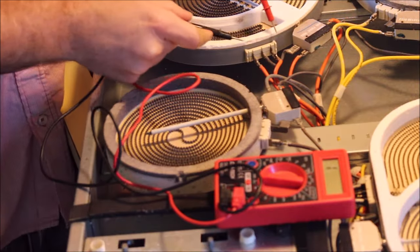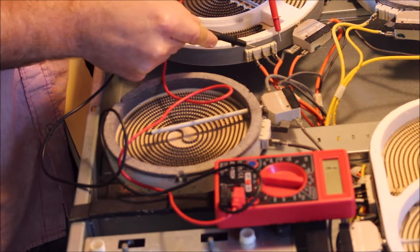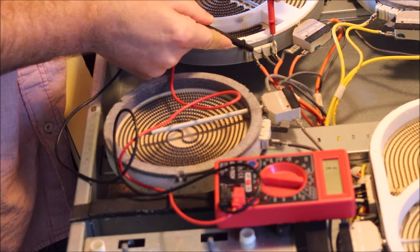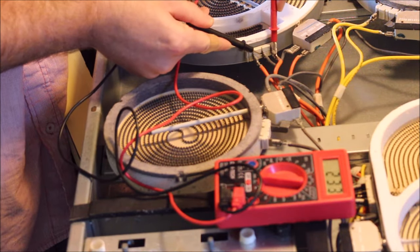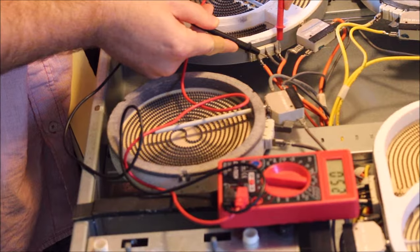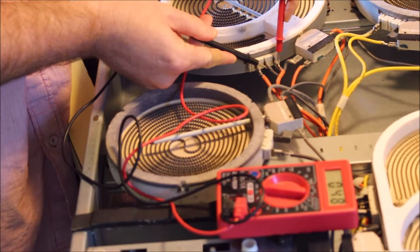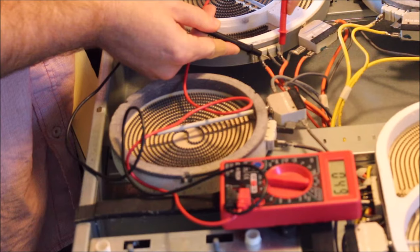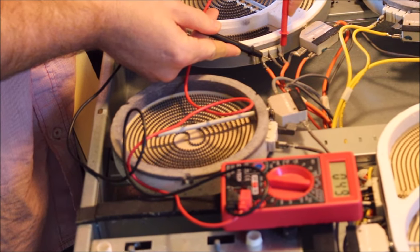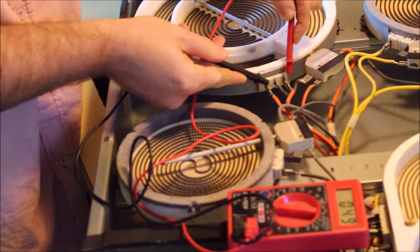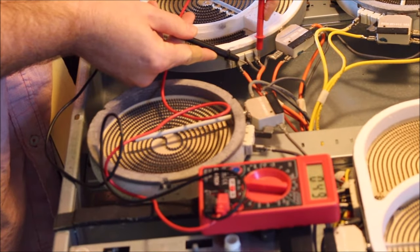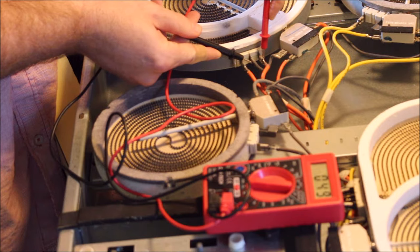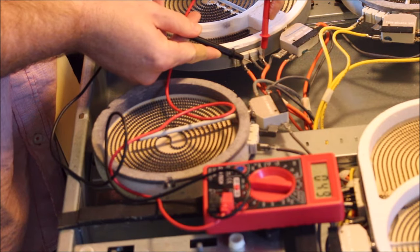Right now I'm testing the continuity, the resistance of this burner element by touching the contacts. So there's a center black wire that I'm touching along with one of the outside wires. I'm getting a resistance of 49 ohms. My voltmeter is set on the ohms setting for resistance. So that means that there's a continuous circuit here. There's some resistance, which the burner is just a big old resistor. It makes a lot of heat.